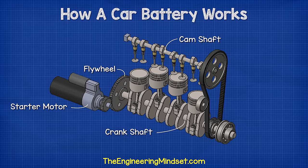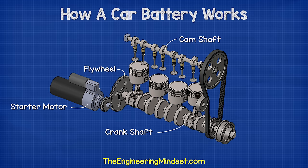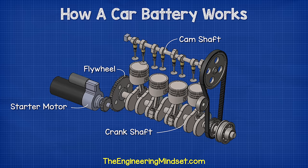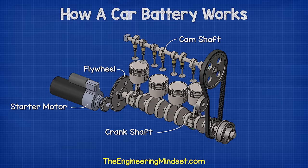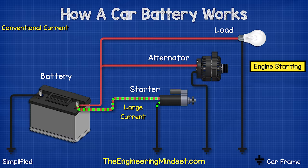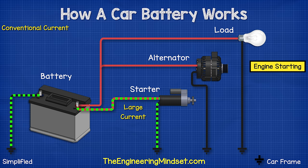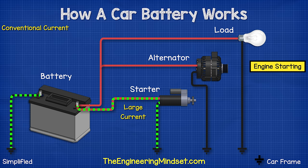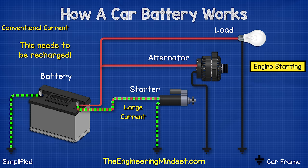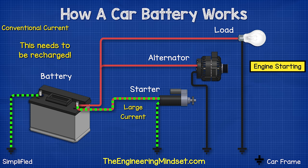The starter motor needs to provide a huge amount of force to be able to turn the flywheel, so it will draw an extremely large current — possibly hundreds of amps — but this is only for a few seconds. This large current demand is going to reduce the energy storage of the battery, so we will need to top this back up.